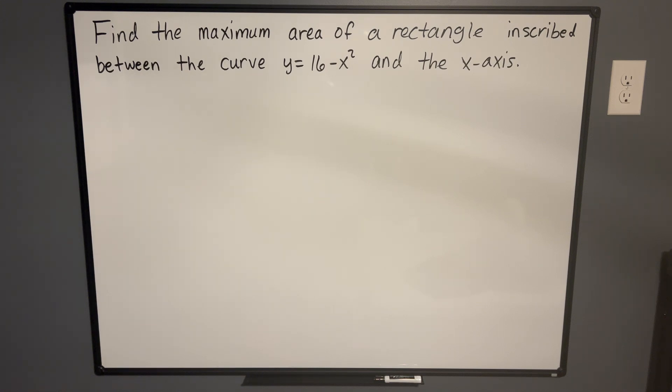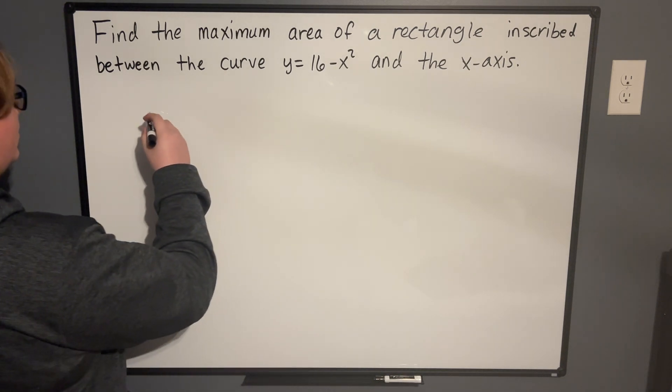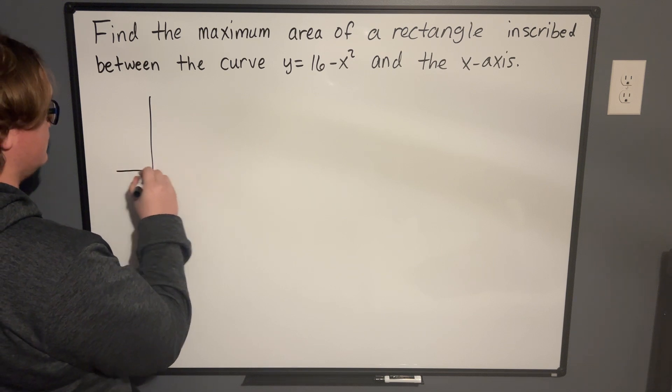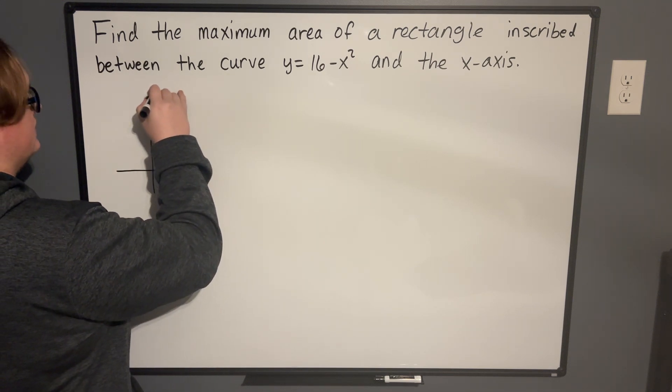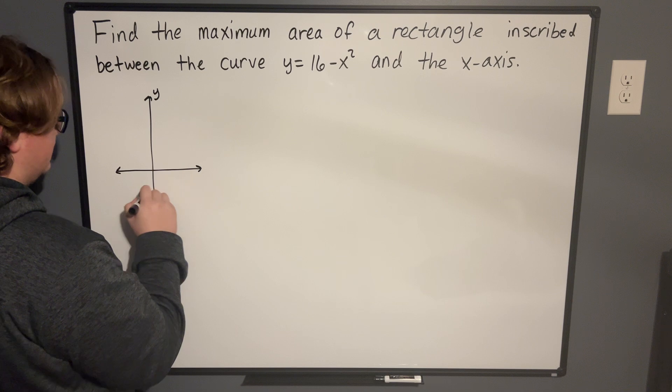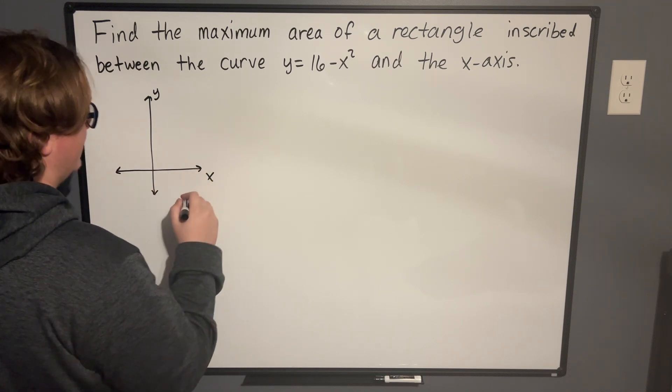So the question is, find the maximum area of a rectangle inscribed between the curve y equals 16 minus x squared and the x-axis. I think a logical first step here is going to be to draw out the picture of what's happening. So let's go ahead and draw our coordinate plane. This is going to be our y-axis. This will be our x-axis. This is going to be our standard coordinate plane here.